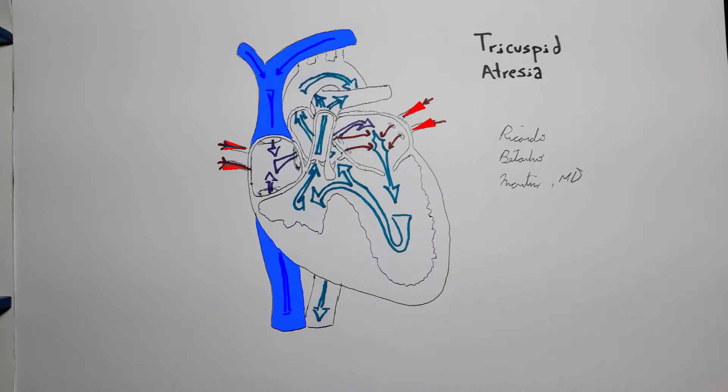Tricuspid atresia is one of the cyanotic congenital heart diseases, cardiac malformations that cause right to left shunting and mixed oxygenated blood to be pumped out of the heart into the systemic circulation causing early cyanosis.